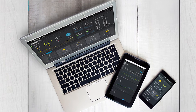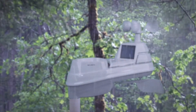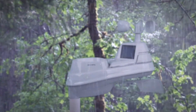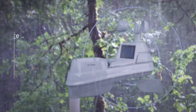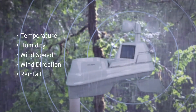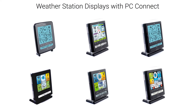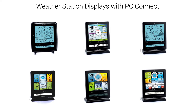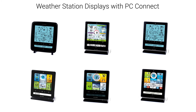Setup is easy. Simply place the 5-in-1 weather station outside to begin measuring your specific environmental conditions, including temperature, humidity, wind speed, wind direction, and rainfall. The weather station wirelessly sends its readings to your indoor digital display for quick access to your local climate information.